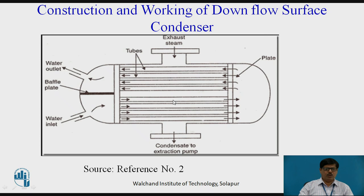When this steam enters into the condenser shell, it comes in contact with the cold surface of the tubes because the cooling water is circulated through these tubes. The cooling water is circulated with the help of a cooling water pump through the lower half portion of the condenser shell. It flows from one end to another end and then enters into the upper half portion of the condenser shell where it returns back and goes out. When the exhaust steam comes into contact with the cold surface of the cooling water tubes, it gets condensed and the condensate is removed from the bottom side with the help of a condenser extraction pump. This surface condenser is very commonly used in modern steam power plants because the vacuum produced inside is of high level.